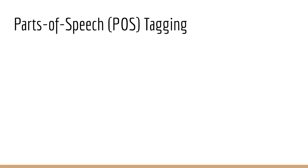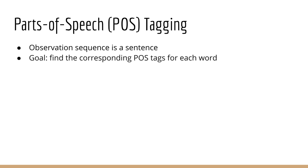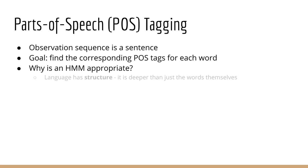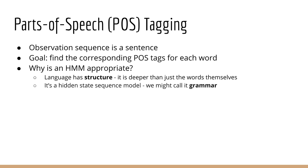The idea behind parts of speech tagging is this. Our observation sequence is just a sentence, like any sentence you might grab from Wikipedia. Our job is to take this sentence and find the corresponding parts of speech tags. Why might this be modeled with an HMM? Well, consider that our language has structure — this structure goes deeper than just the words themselves. In other words, it follows a hidden state sequence model. We might call this grammar.